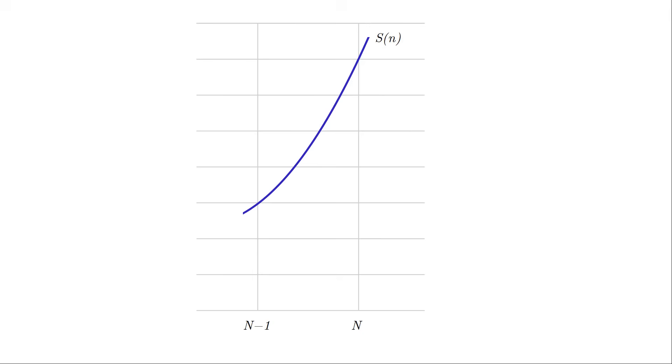I'll consider an arbitrary part of the curve between n minus 1 and n. First take a straight line approximation. The function value on the left is half n squared minus half n, and the function value on the right is half n squared plus half n. The average is half n squared, so the orange area is half n squared.